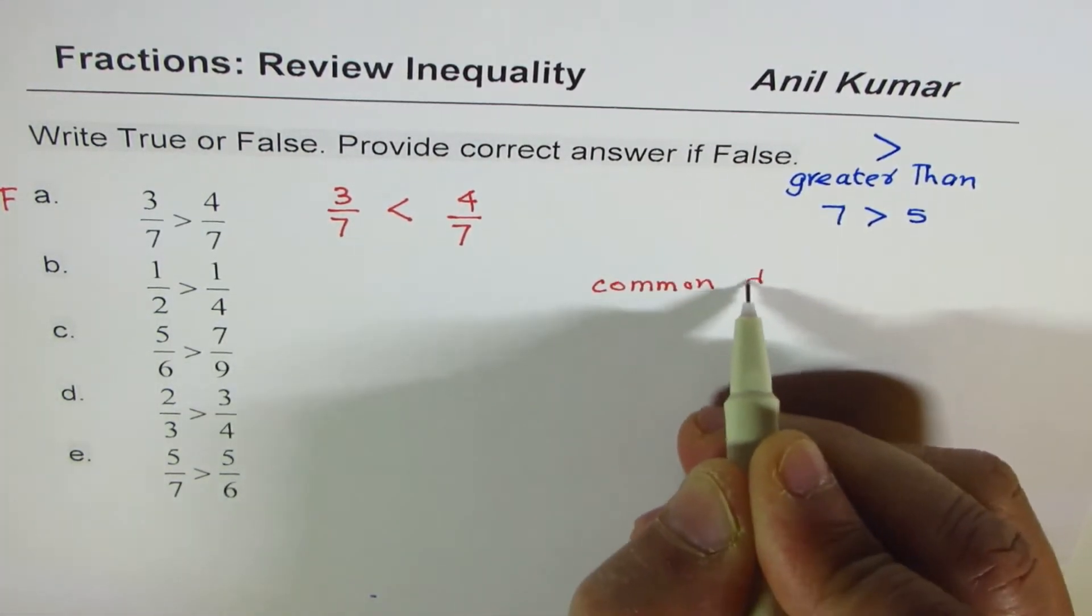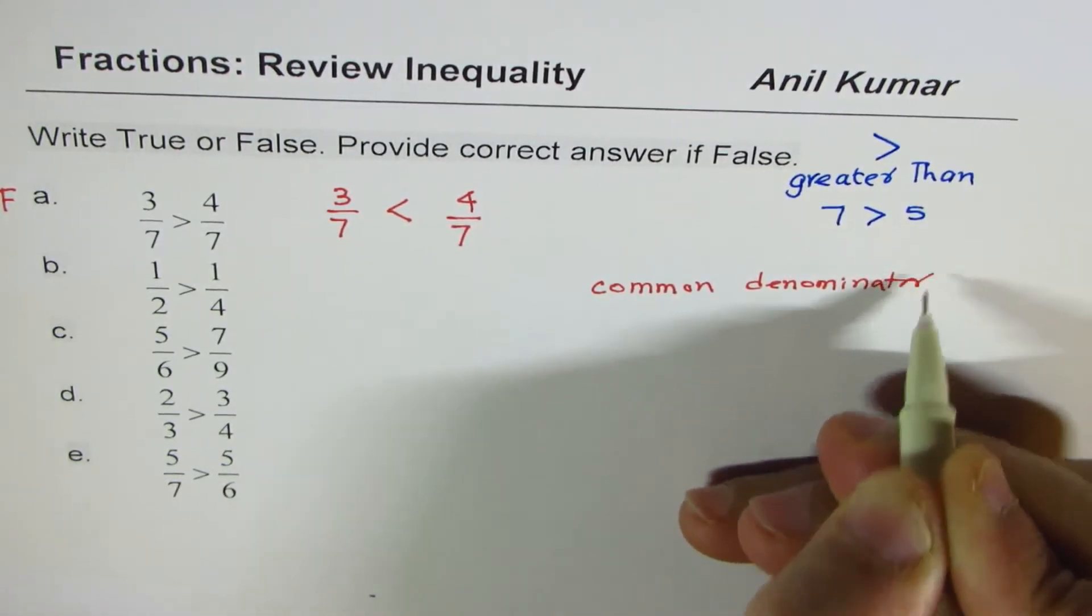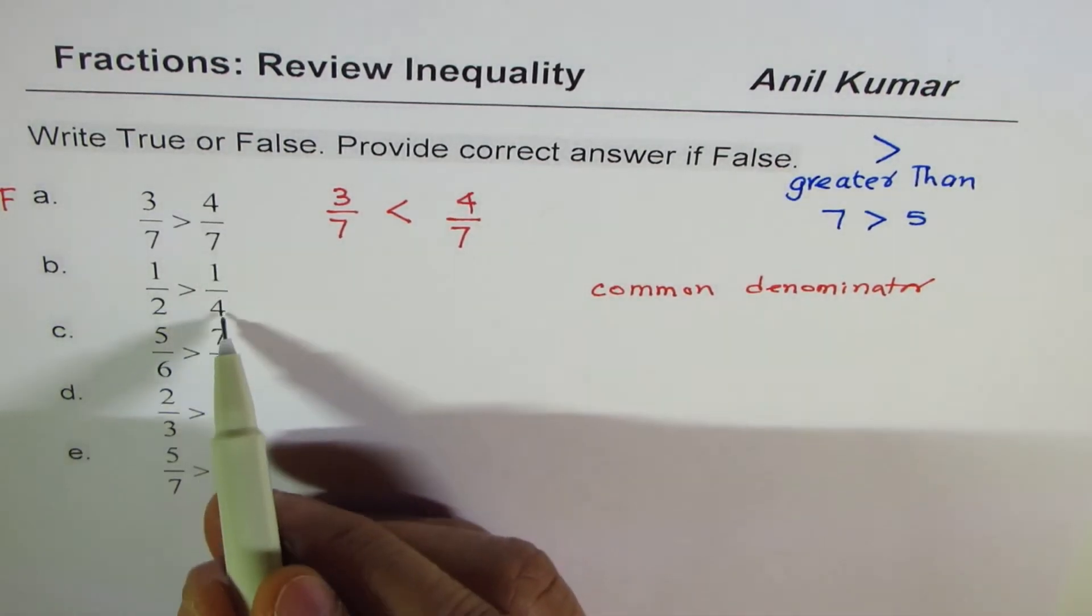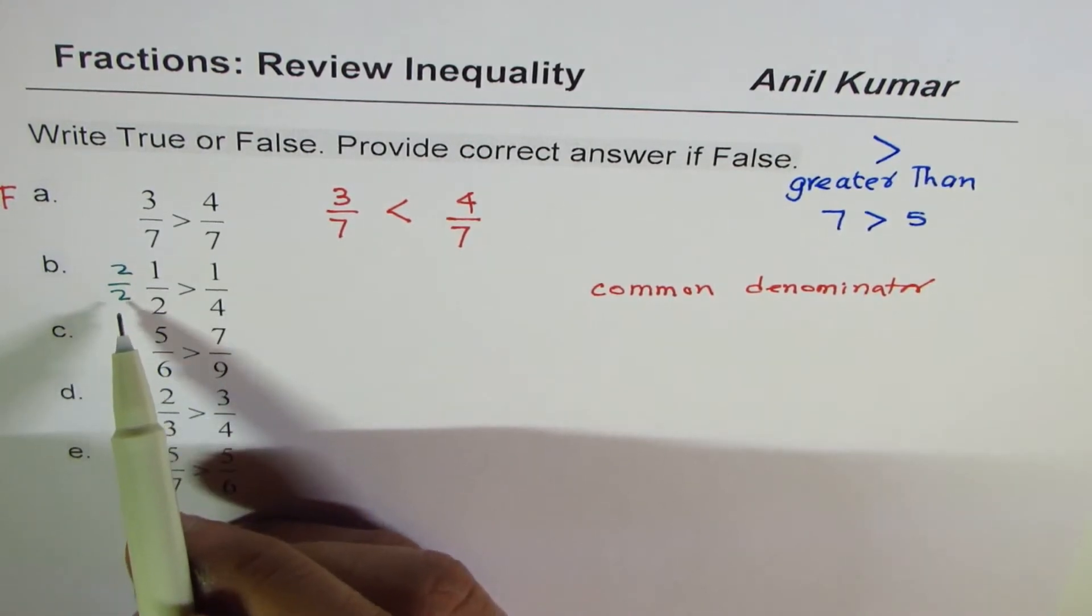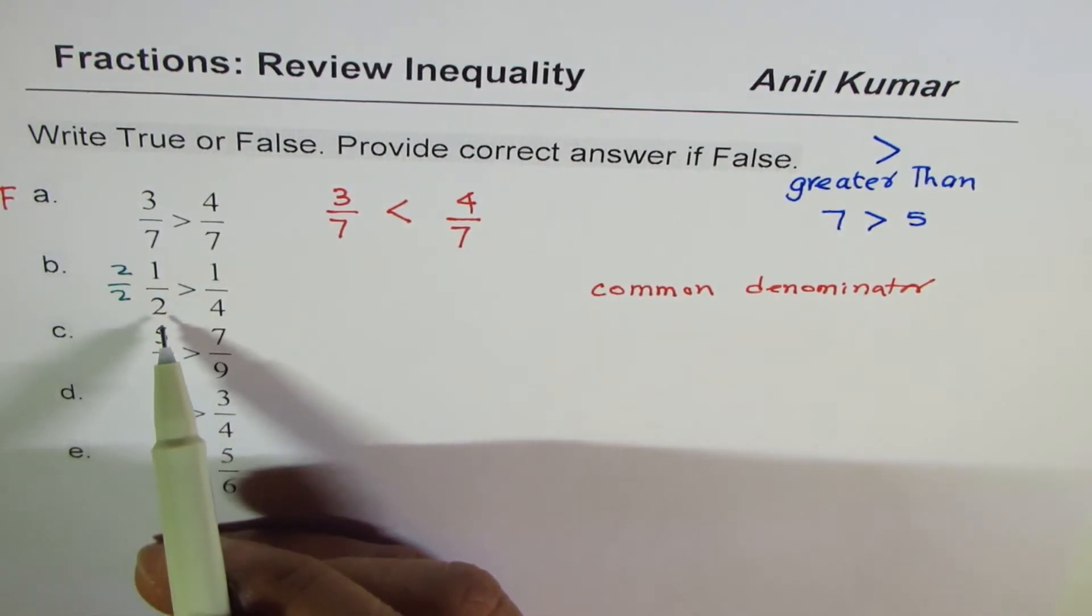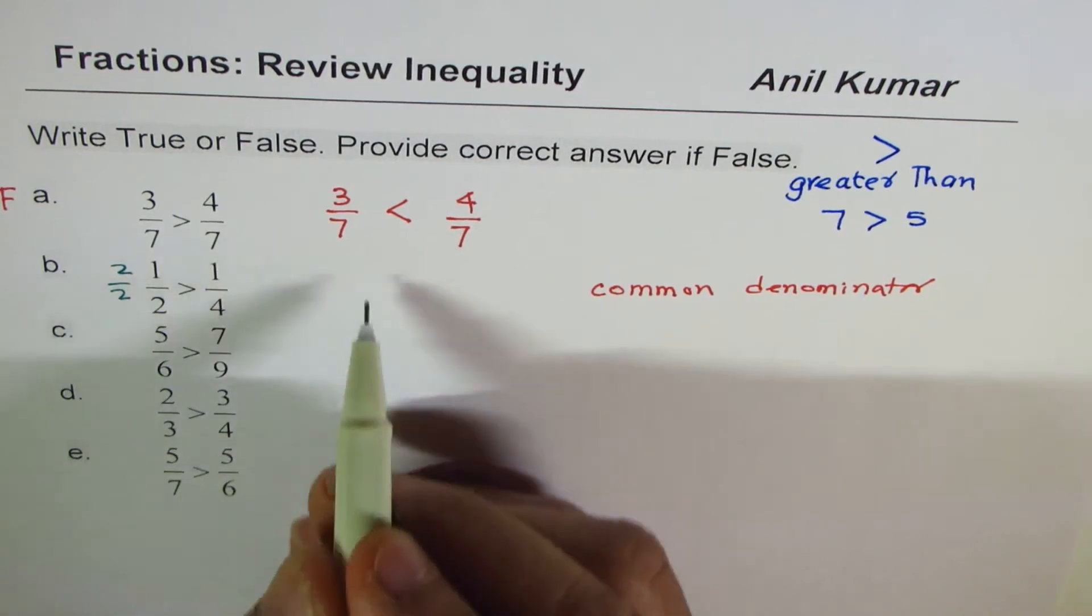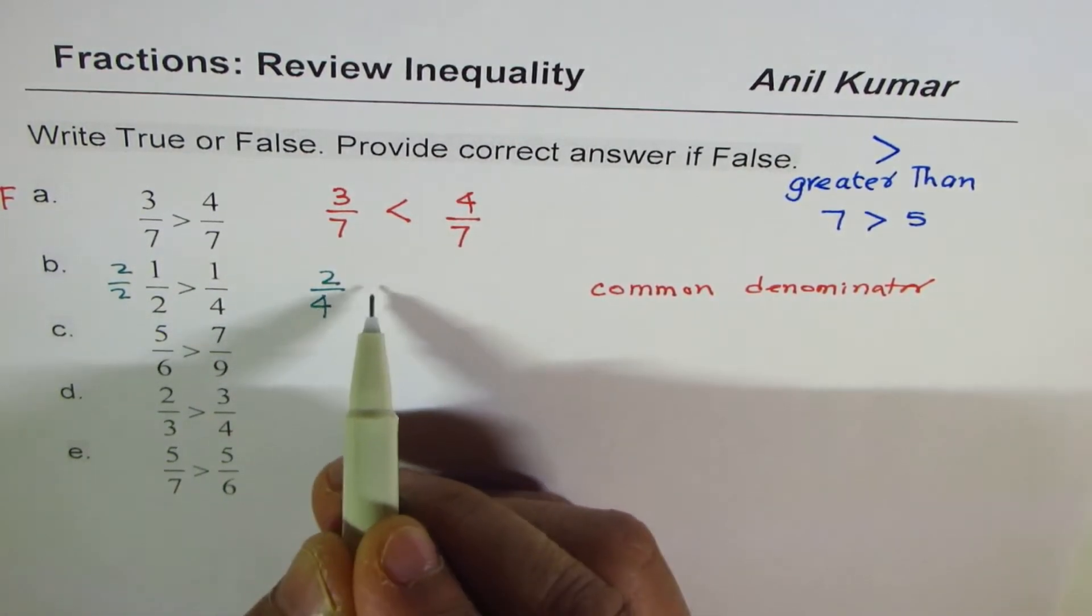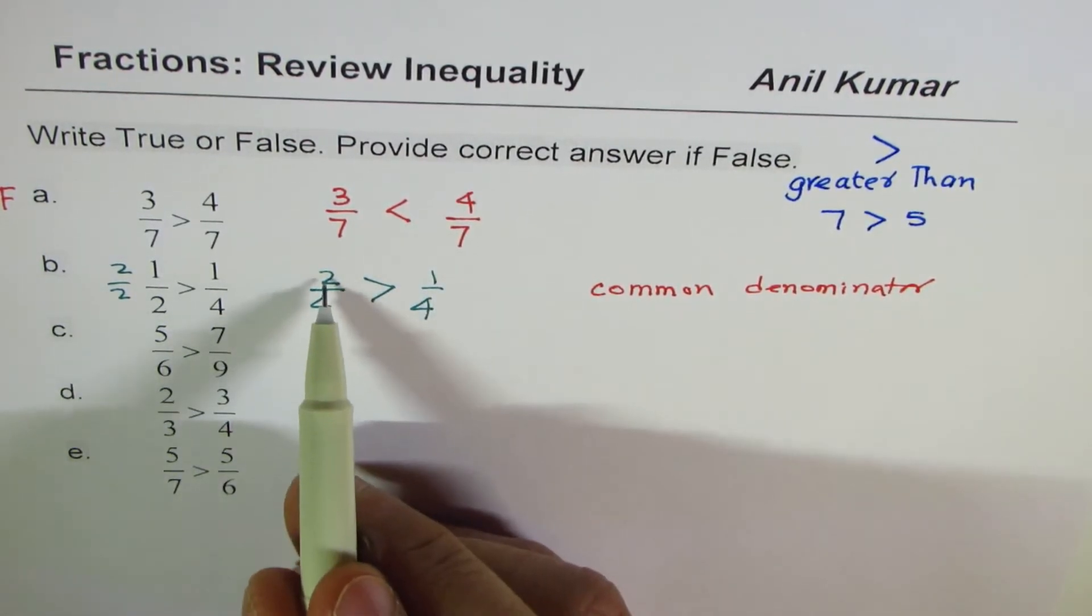So to make common denominator, I have 4 here. I have to multiply this by 2 over 2. 2 over 2 is 1. Multiplying by 1 is not going to change half, but if I do that I can make common denominator. So 2 times 1 is 2, 2 times 2 is 4. So I get 2 over 4 and that is what the question becomes.